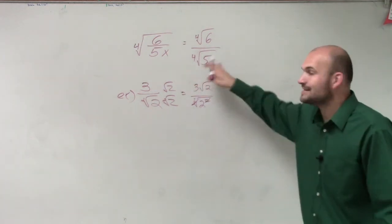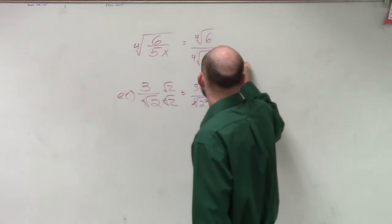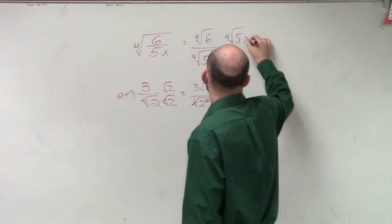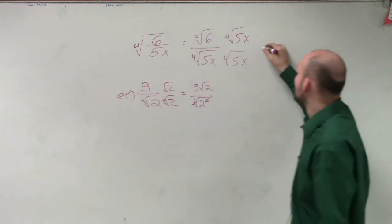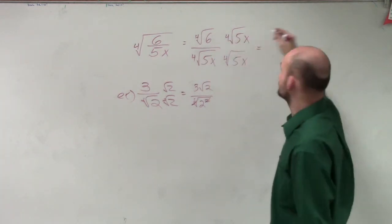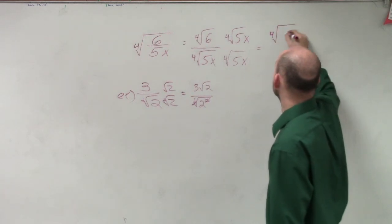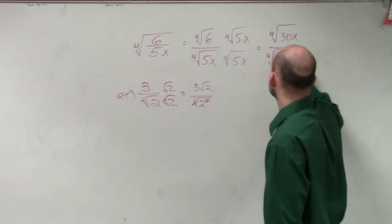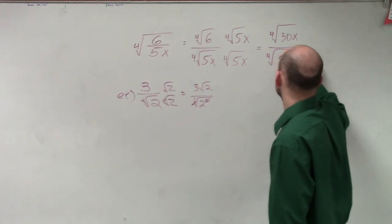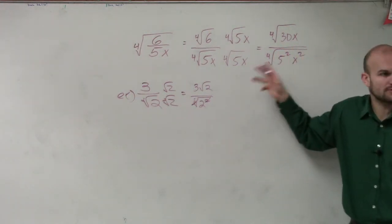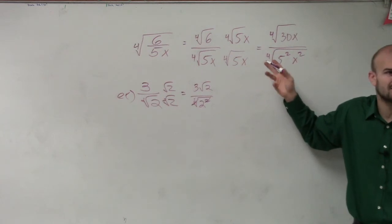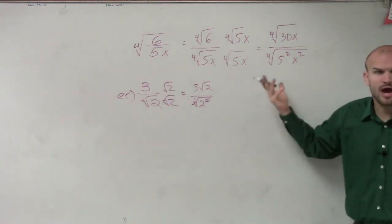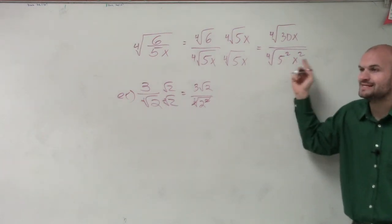So if I just say, if I just multiply this by the fourth root, because here's where students make their mistake, then I'm now going to get, we know this is the product rule, so I have the fourth root of 30x divided by the fourth root of 5 squared x squared. Does 5 squared, does the fourth root of 5 squared cancel out or undo each other? No. Does the fourth root of x squared undo each other? No.